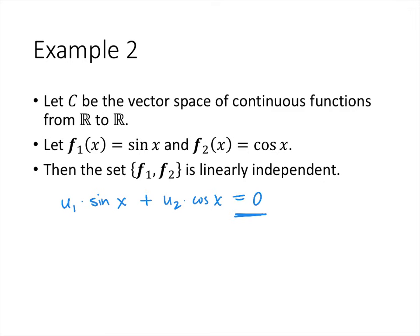For that to be true, some constant times the sine function would have to equal some other constant times the cosine function. But sine and cosine aren't multiples of each other, so the only solution is setting both u's equal to zero. That's an example where the vectors are linearly independent.